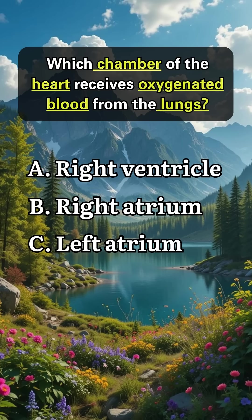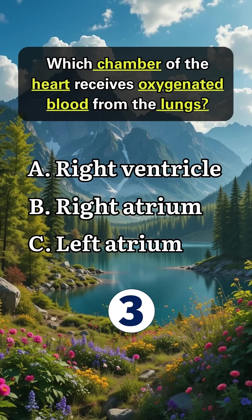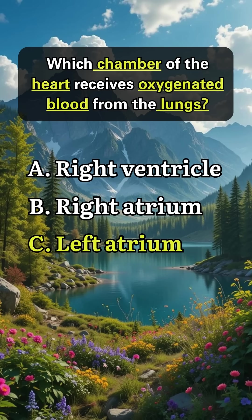Which chamber of the heart receives oxygenated blood from the lungs? Answer C, left atrium.